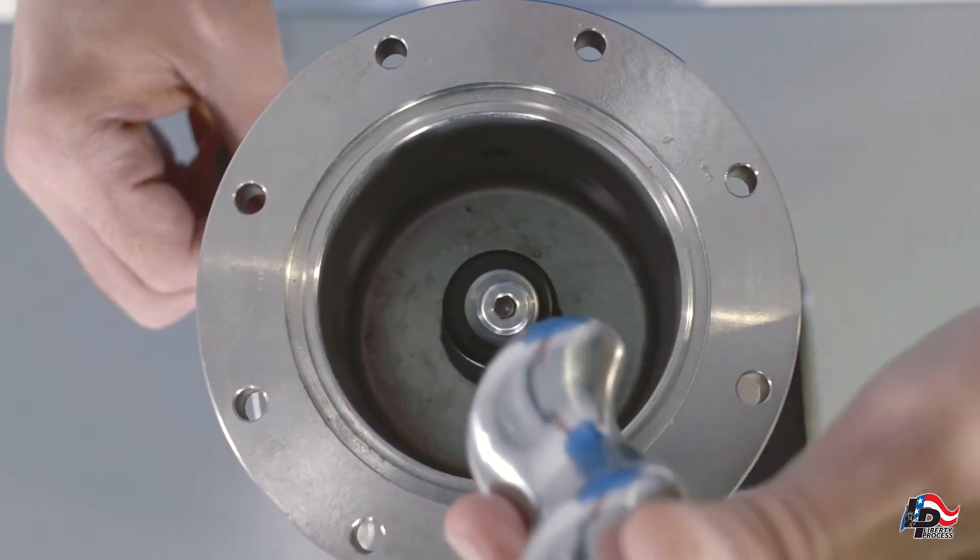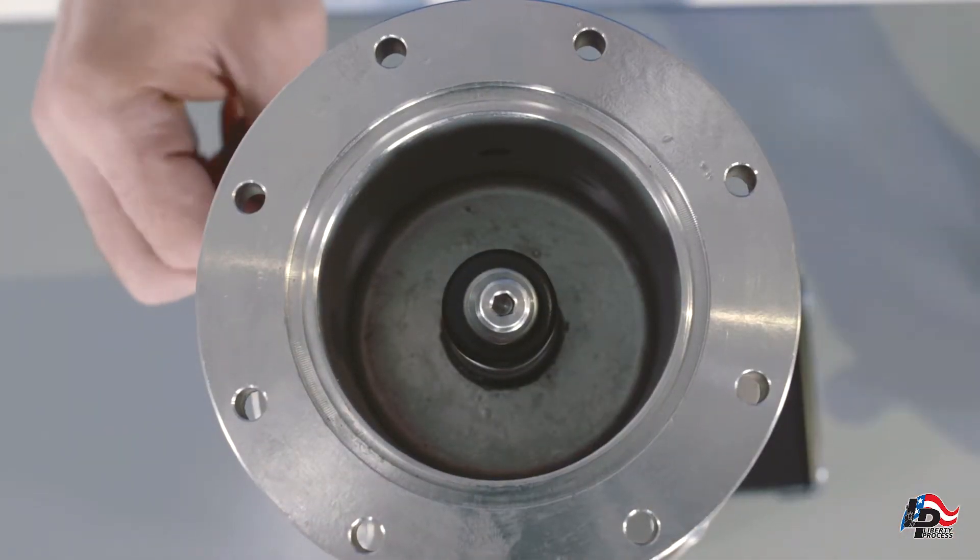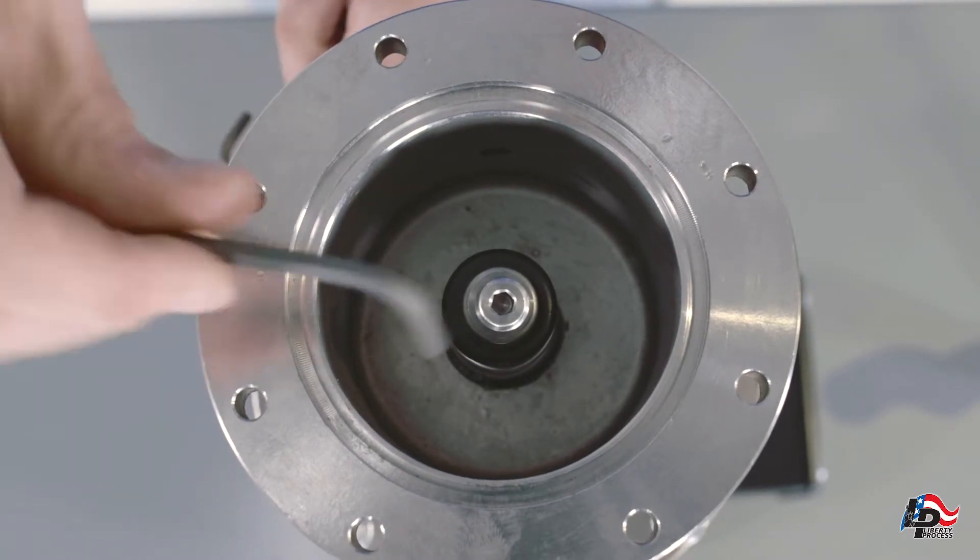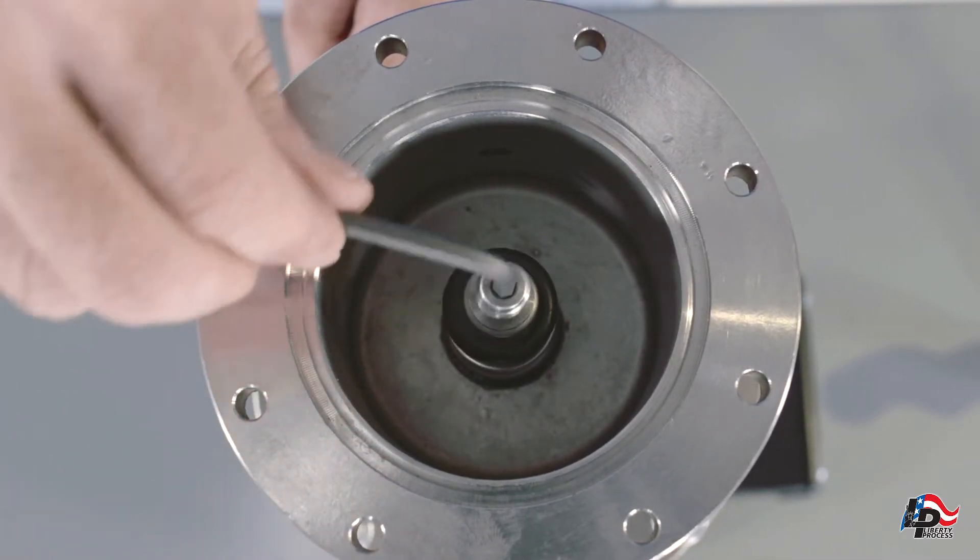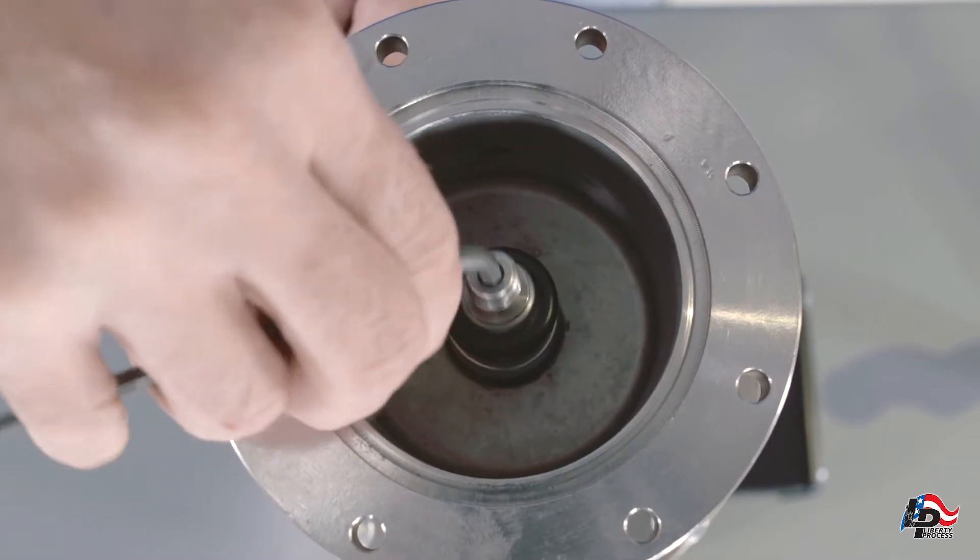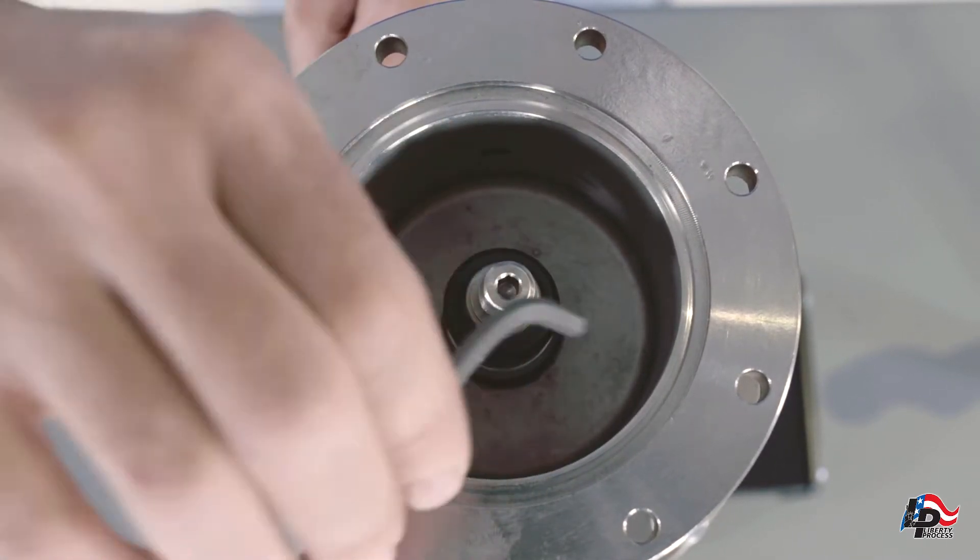Leaving the 7/64 inch Allen wrench in the stub shaft, use the 3/16 inch Allen wrench and place it into the end into the top of the pump flex joint. Turn counterclockwise to remove the flex joint from the pump stub shaft.